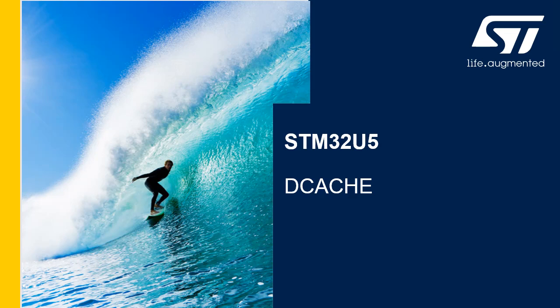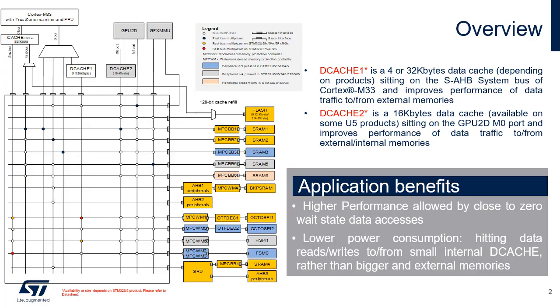Hello and welcome to this presentation of the DCache module, which is embedded in all products of the STM32U5 microcontroller family. The STM32U5 series embeds up to two data caches. DCache1 is a 4 or 32 kilobyte data cache, depending on products. DCache2 is a 16 kilobyte data cache available on some U5 products.